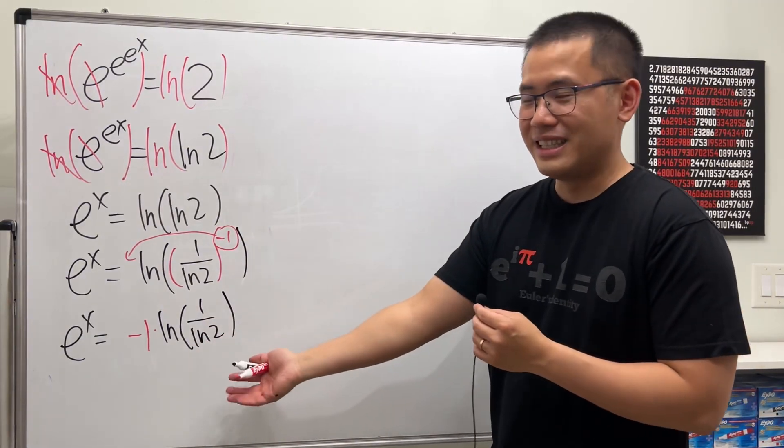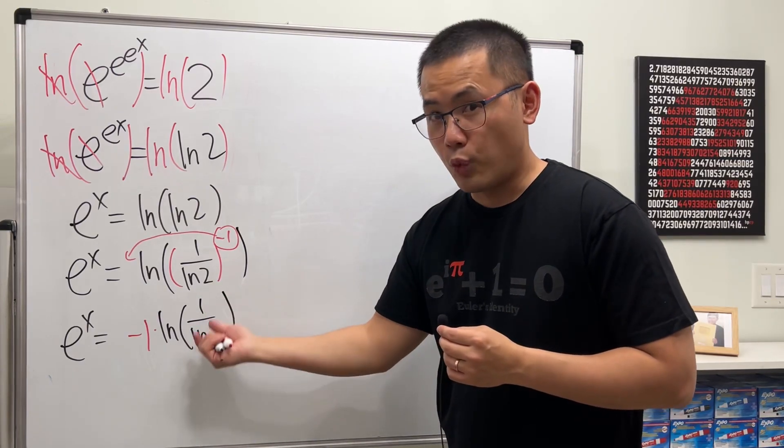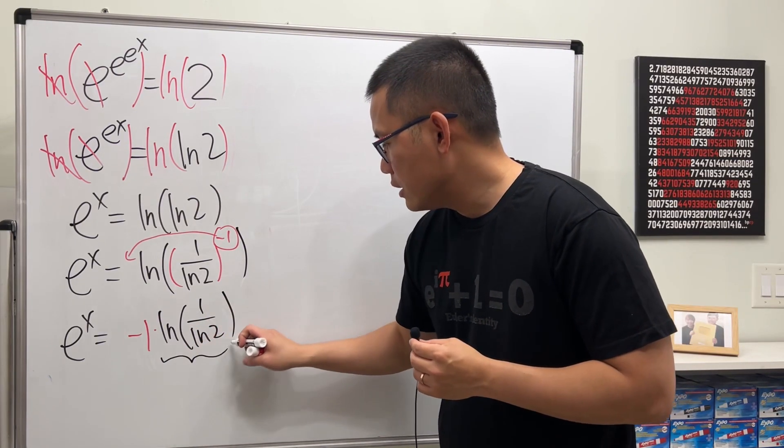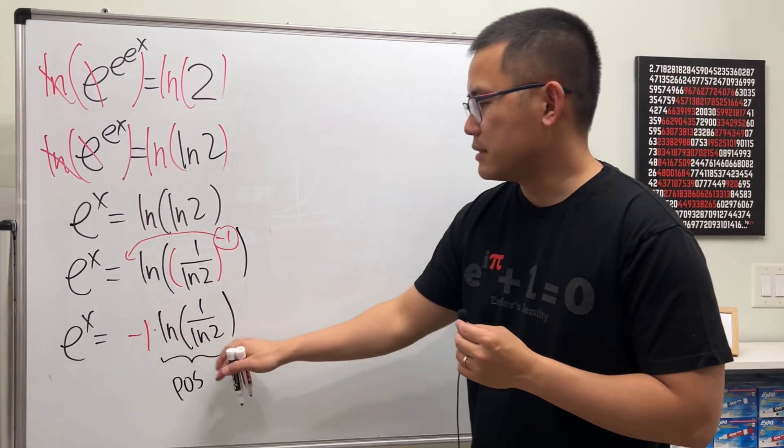This right now looks like a negative number, right? And, in fact, the input now here is greater than 1. So, here, you actually get a positive number. And, of course, negative 1 times this, the whole thing is negative.